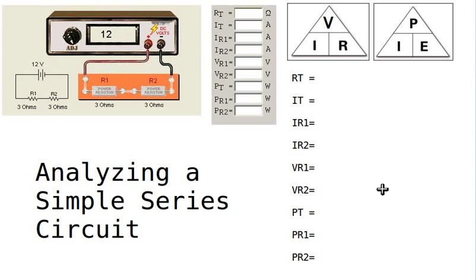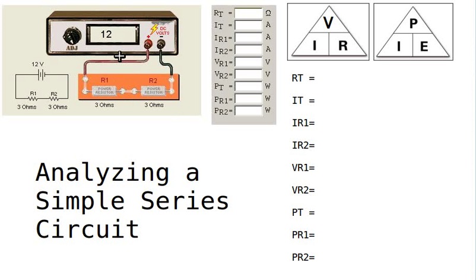Let's analyze a simple series circuit using Ohm's Law and the power formula. Here we have a power supply providing voltage to a series circuit consisting of two resistive loads, or resistors, R1 and R2, each having a resistance value of 3 ohms. The power supply is providing 12 volts. A power supply is like a battery, and here is the schematic diagram.